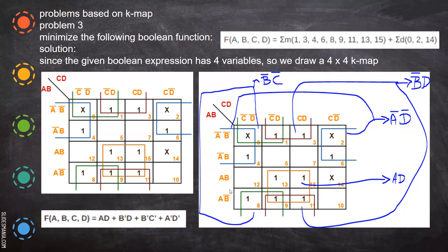Now for this, A is there, B bar is gone. And if you see this, we have written A. If you see this, C bar gone, D is there. So you write all these — this is the reduced equation of this given equation.